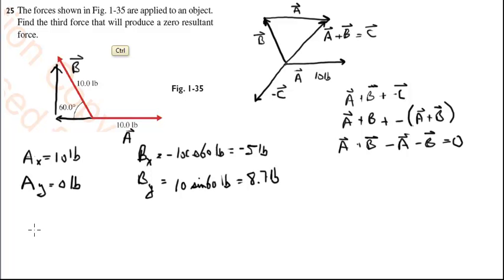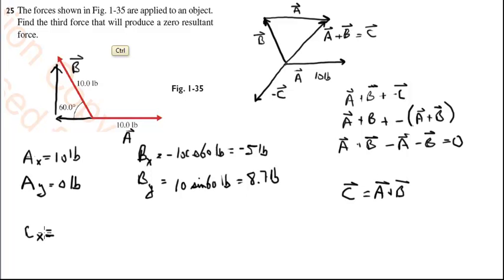The vector I want is minus C, so let's figure out C first. C equals A plus B. The X component of C is 10 pounds minus 5 pounds, which is 5 pounds. The Y component of C is 0 plus 8.7 pounds, which is 8.7 pounds.